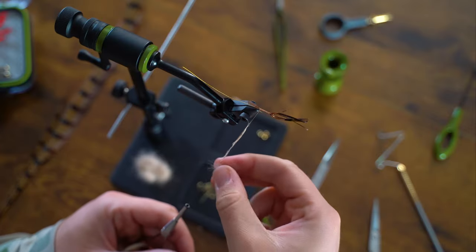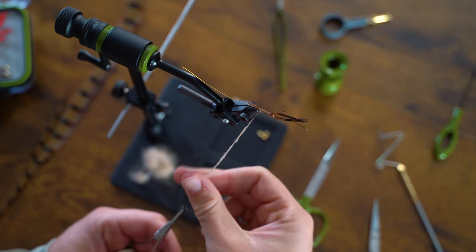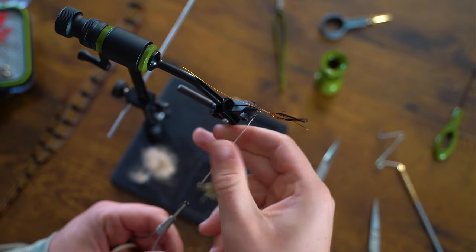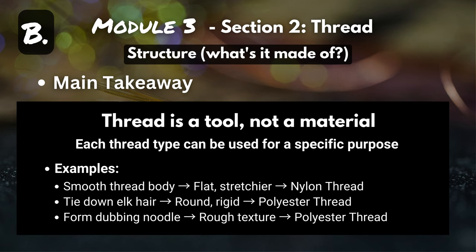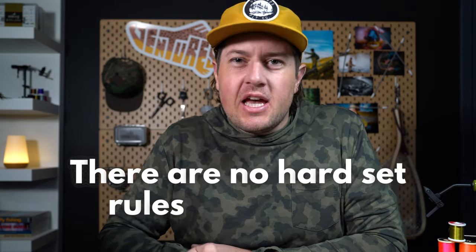If I'm tying a hare's ear and I need to form a dubbing noodle, the rough texture of polyester thread actually makes it easier for that dubbing to grip the thread. But there are no hard set rules in fly tying — you can use polyester or nylon thread for every single fly. As you progress on your fly tying journey, just know that using different types of thread is like adding another tool to your tool belt.